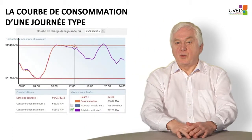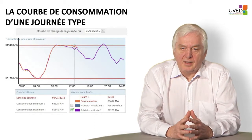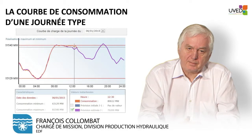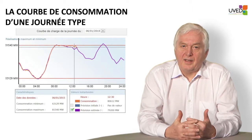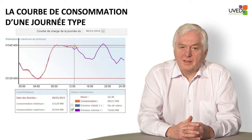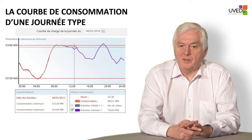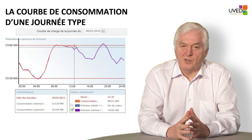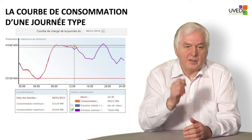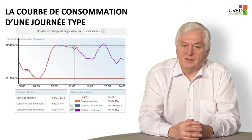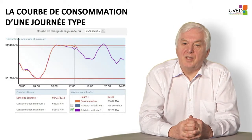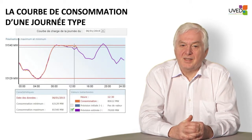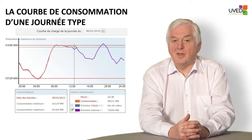Let us now look at the consumption curve during a given day, for instance the 6th of January 2015. The curve is a real-time curve you can look up on the RTE website, updated every 15 minutes. In purple we see the forecast made the previous day. On January 5th, it was estimated that at 4 o'clock in the morning minimum consumption would be approximately 63,000 megawatts, and at 7 o'clock p.m. maximum consumption would be 81,000 megawatts. Between 5 and 7 o'clock in the morning, consumption moves from 65,000 to 80,000 megawatts.